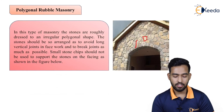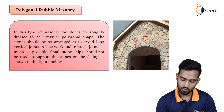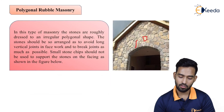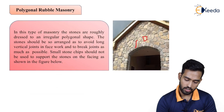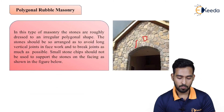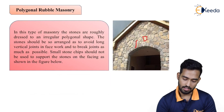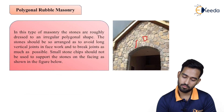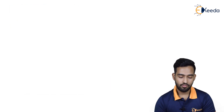Then comes polygonal rubble machinery. In this type of machinery the stones are roughly dressed to an irregular polygon shape, as you can see. The stones should be arranged so as to avoid long vertical joints — as you can see there is no straight long vertical joint — and to break joints as much as possible. Small stone chips should not be used to support the stones on the facing, as shown in the figure. Polygon-shaped stones are used and vertical joints are avoided.